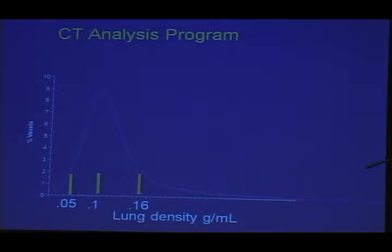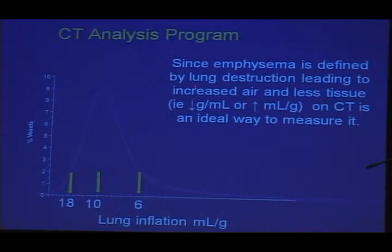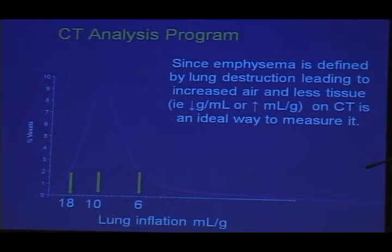You can also convert lung density to the reciprocal — lung inflation — so instead of grams per ml, you can convert it to ml per gram. Normal lung is about 6 to 7 ml of gas for every gram of lung tissue. Since emphysema is defined by lung destruction leading to increased air and less tissue, that means a decrease in grams per ml or an increase in ml per gram. So we can use CT to measure the amount of emphysema.